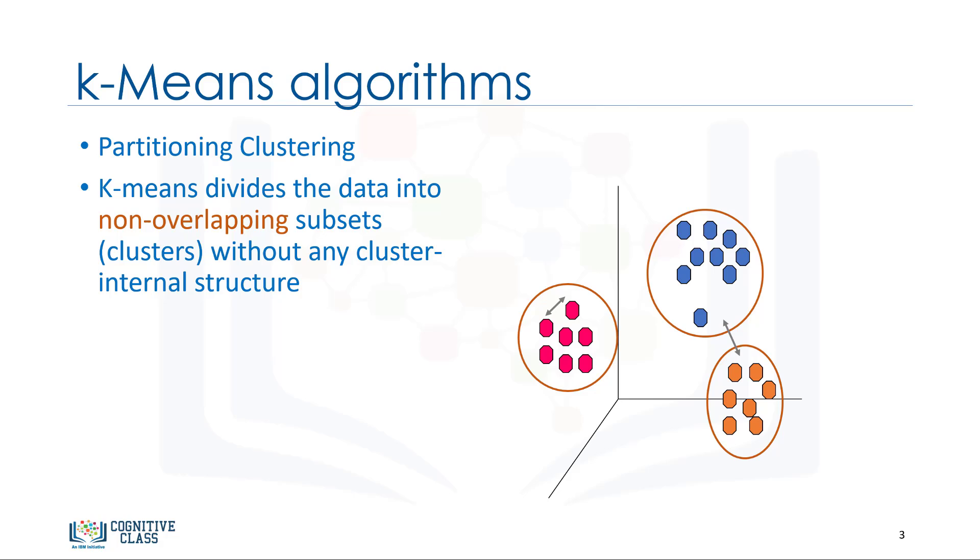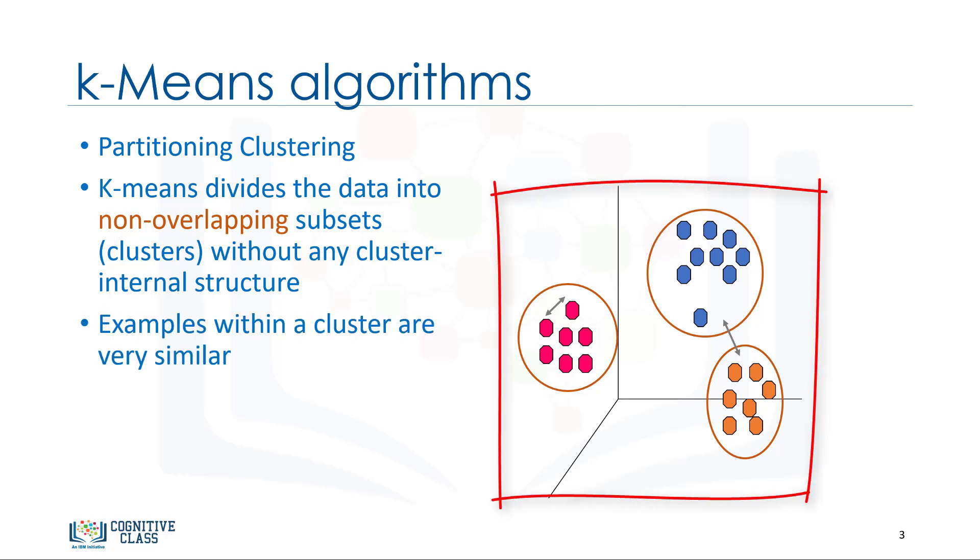That is, it divides the data into k-non-overlapping subsets, or clusters, without any cluster internal structure or labels. This means it's an unsupervised algorithm. Objects within a cluster are very similar, and objects across different clusters are very different or dissimilar.